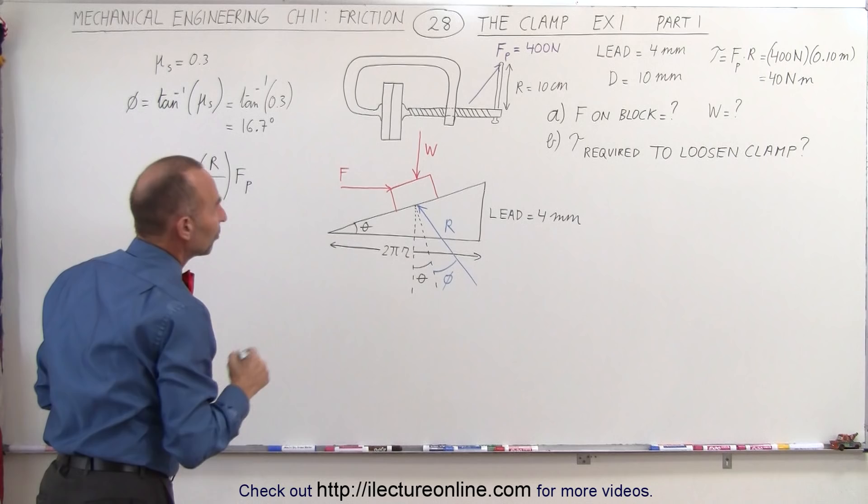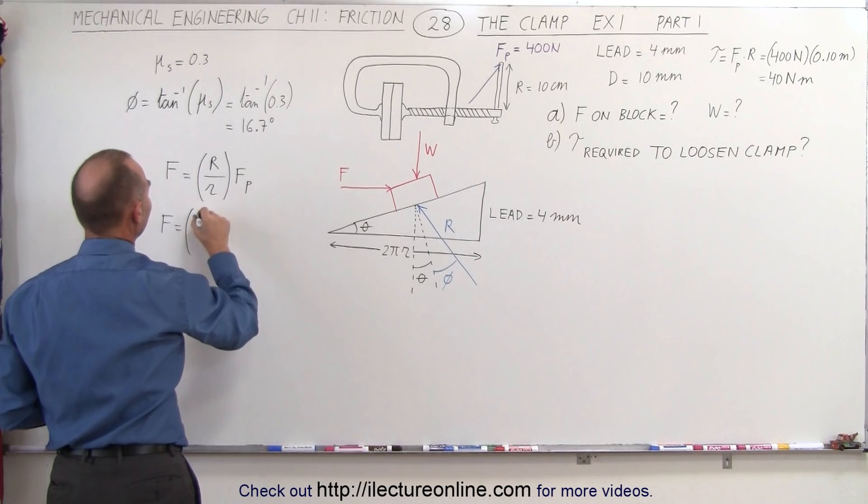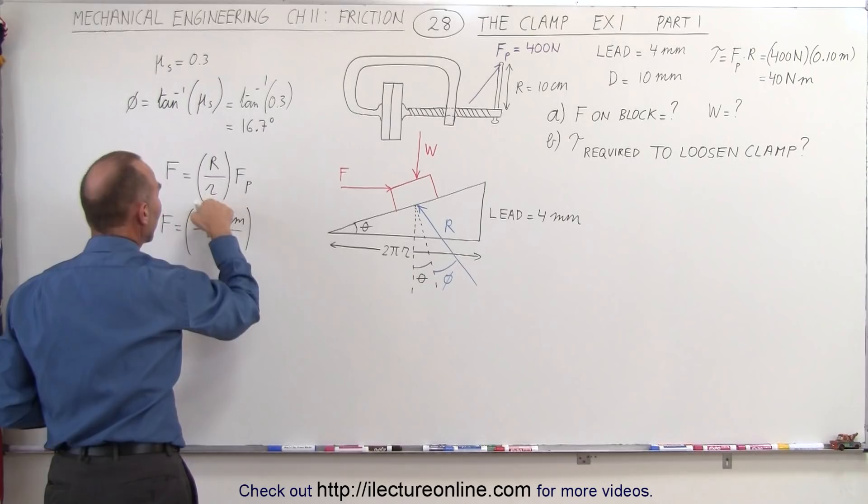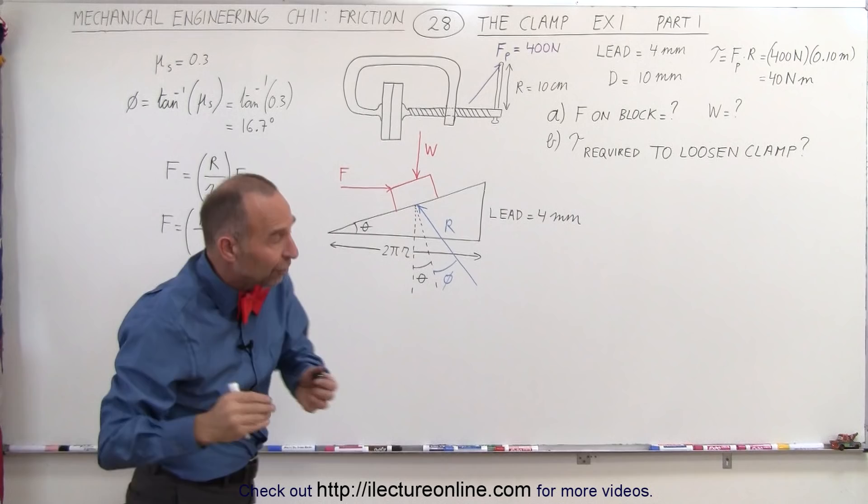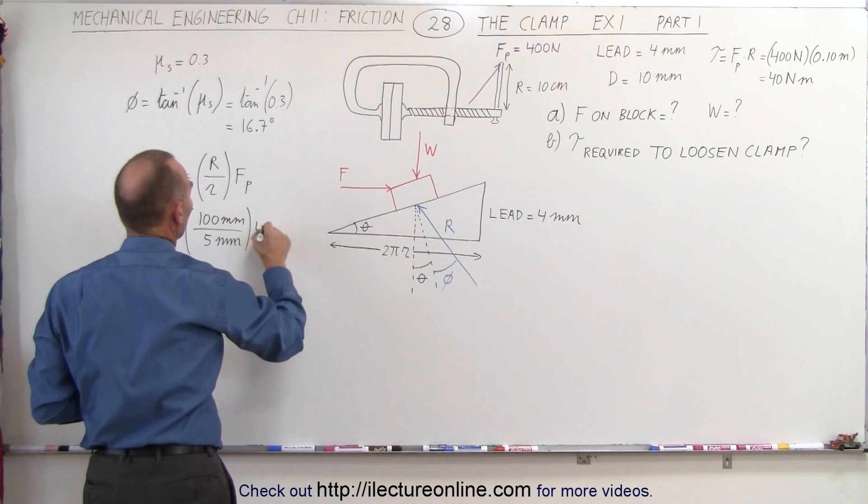Since Fp is 400 newtons, we can say that F is equal to the ratio of 10 centimeters, which is 100 millimeters, divided by the radius of the screw. Now the diameter is 10 millimeters, which means the radius is only 5 millimeters, so we divide that by 5 millimeters and multiply that times 400 newtons.